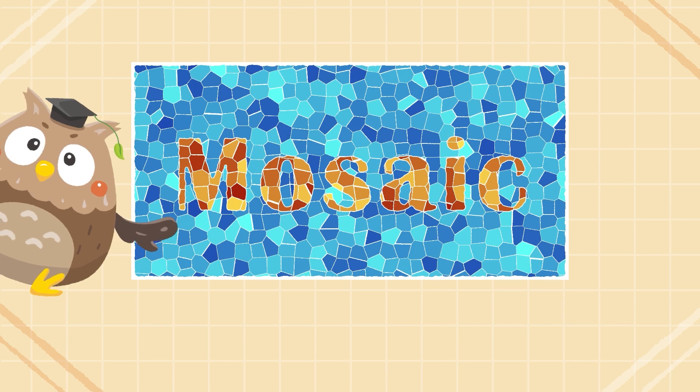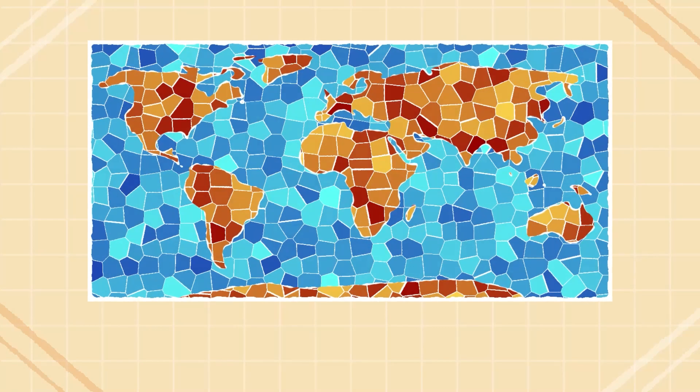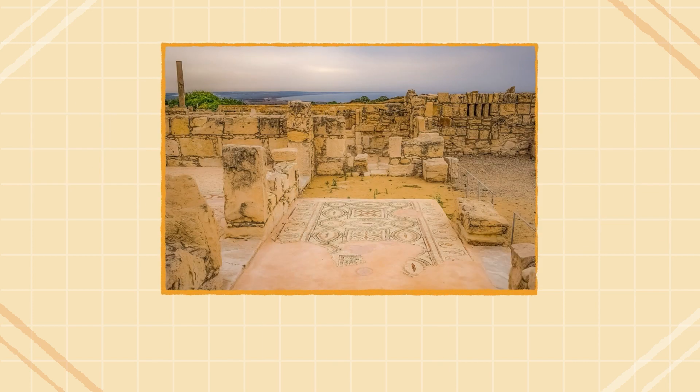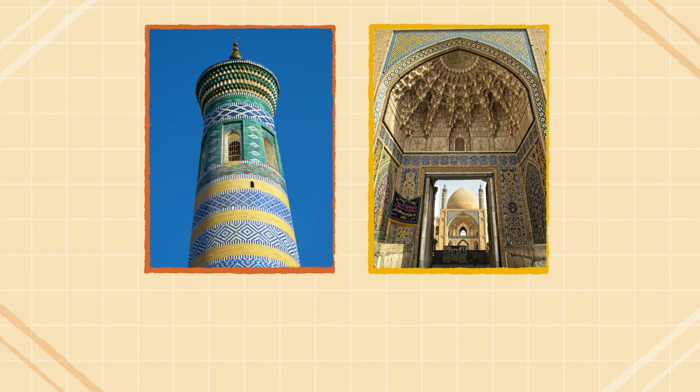Mosaic art has a long history of more than 4,000 years, and it can be found in many parts of the world. For example, Greek mosaic art shows more complicated patterns and pictures. Ancient Romans and Syrians used mosaic for their floors. In Islamic art, we can see mosaics in religious buildings and palaces.